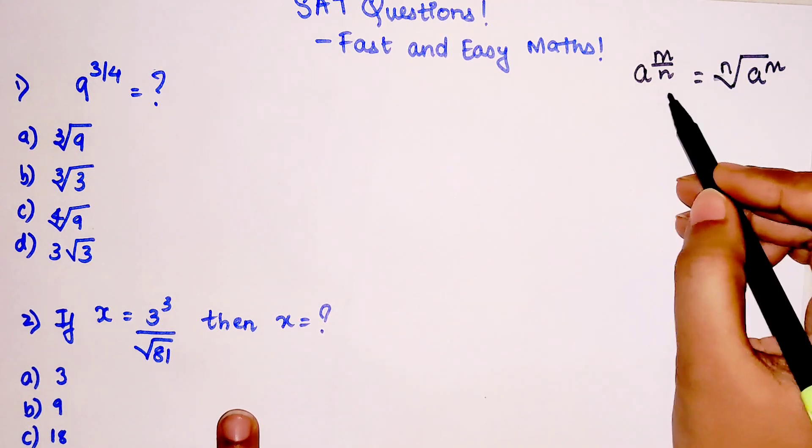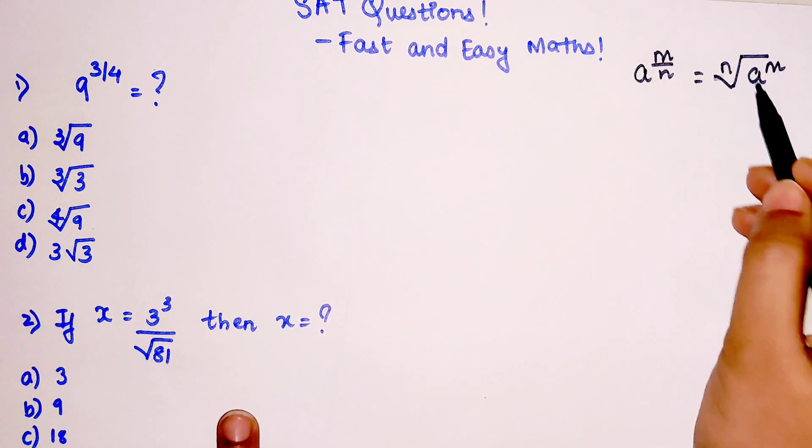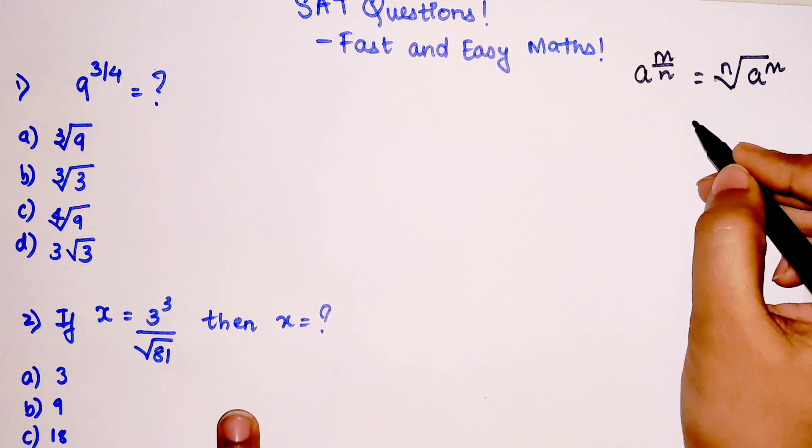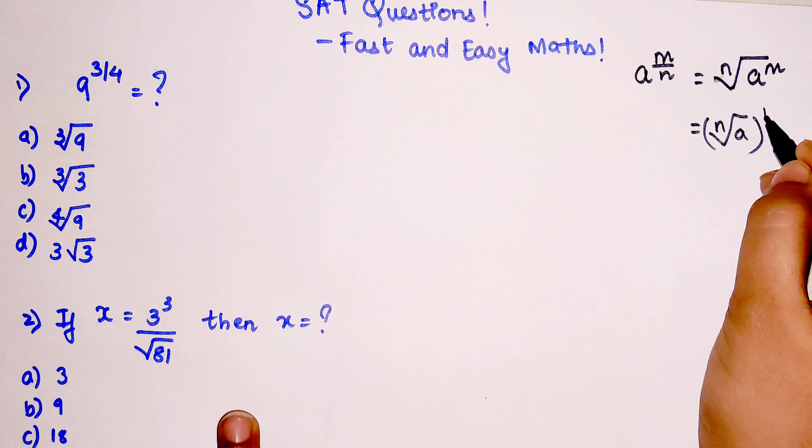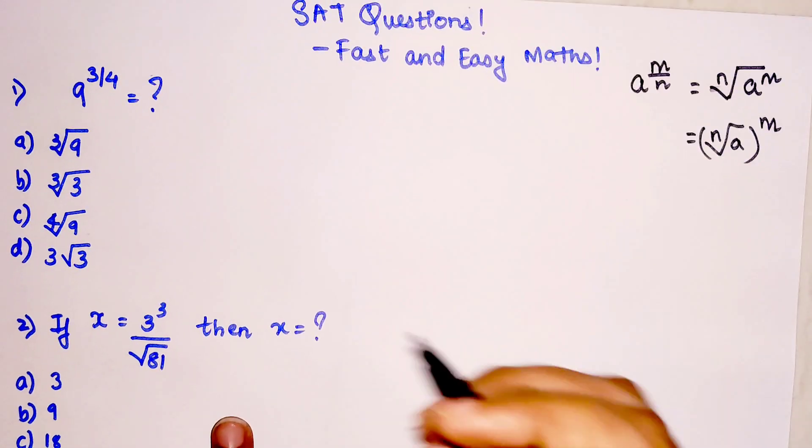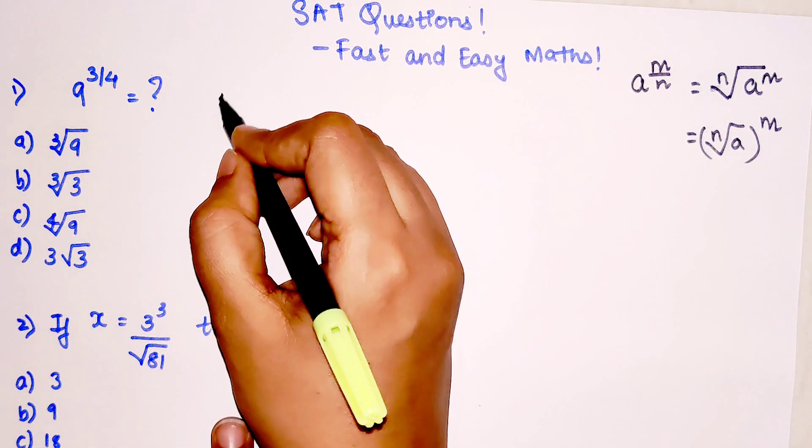This is basically can be read as nth root of a raised to m, or you can also read it as nth root of a, the whole raised to m.